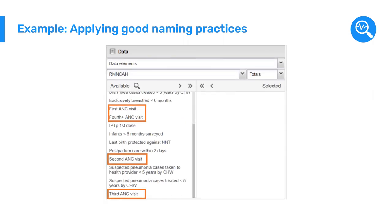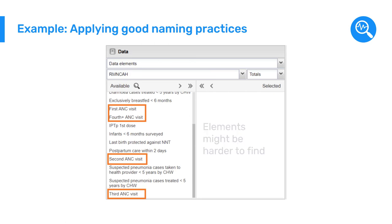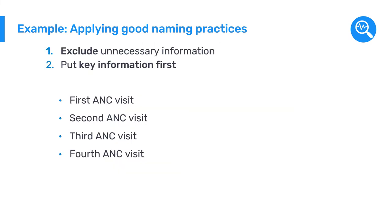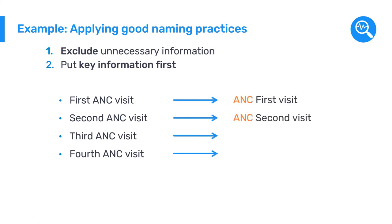We recommend keeping related data elements together where possible. We can change the name of these elements so they start with the essential part of the name. Let's put ANC first, so we get: ANC first visit, ANC second visit, ANC third visit, and ANC fourth visit. This will allow the items to appear together.